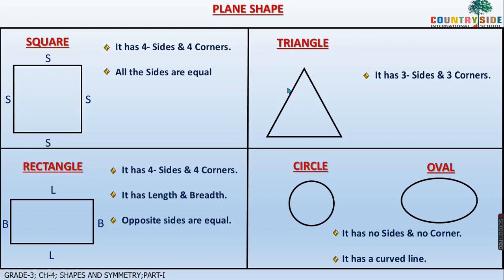Then triangle. In triangle it has three sides — see, one, two, and three sides — and three corners: one, two, and three. Then rectangle. It has four sides and four corners. It has length and breadth — this is the length and this is the breadth of the rectangle. Opposite sides are equal. In square all the sides were equal, but here in rectangle, opposite sides are equal — this side will be equal to this, and this will be equal to this side.